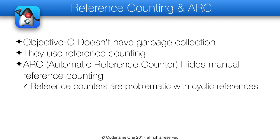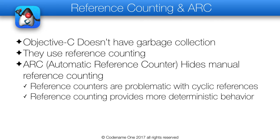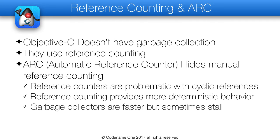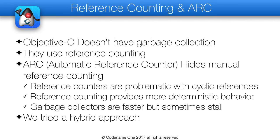Here's the gist of the GC vs reference counting comparison. Reference counting can fail with cyclic references — object A needs object B and vice versa — while GCs are immune to such cases. Reference counting provides more deterministic behavior, meaning it will always perform at exactly the same speed. Garbage collectors are faster but sometimes stall, which can be a problem for UIs since a GC may behave differently across executions. We looked at using a hybrid reference counting/GC solution when developing our VM and eventually scrapped it as there were no benefits. Both approaches are workable and you need to be ready to debug their pitfalls.